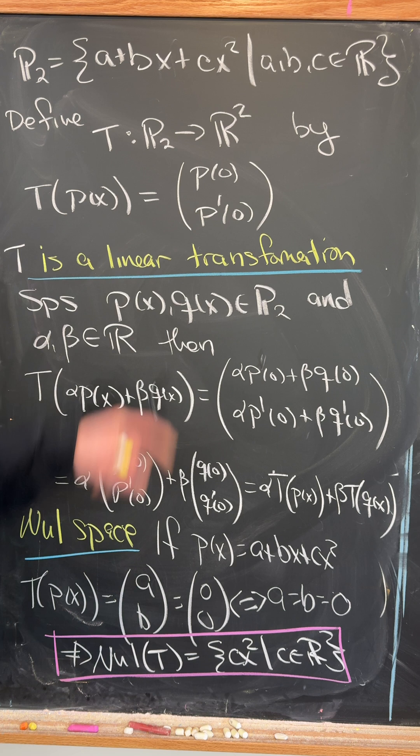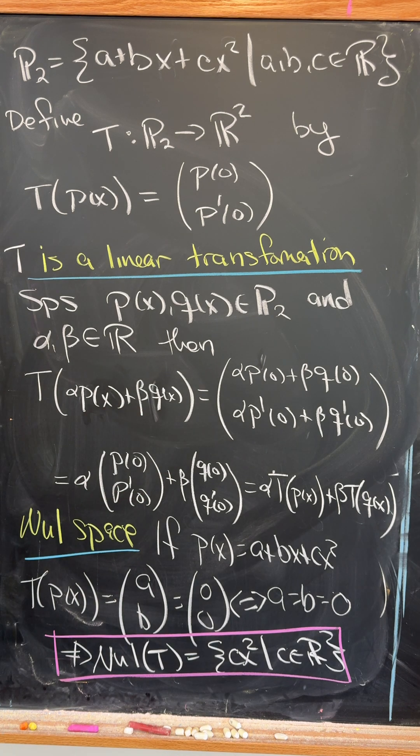that takes a polynomial to a 2-vector given by the polynomial evaluated at 0 and its derivative evaluated at 0.